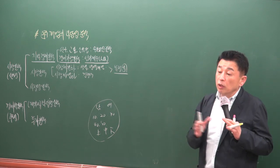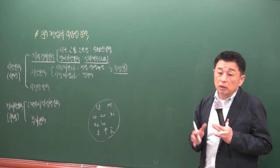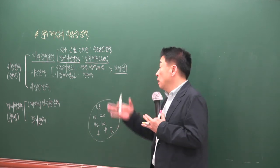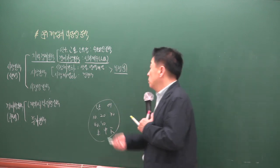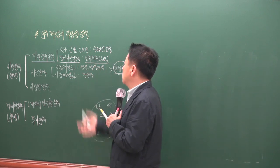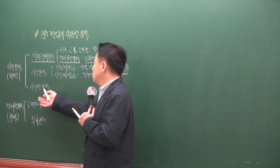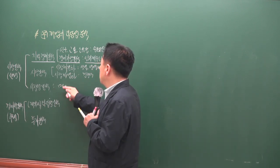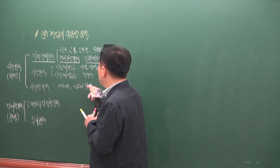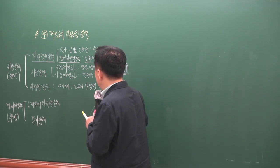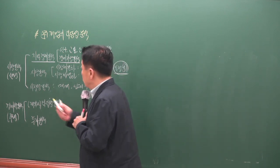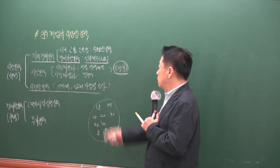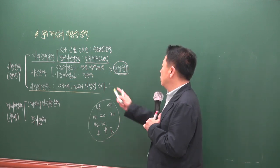개발업자가 모든 유형의 주택을 공급할 수는 없으므로, 상가만 분양하거나 주거만 공급하는 등 타깃 계층이 있습니다. 이 부동산에 대한 시장 세분화와 차별화를 하는 것이 시장 분석입니다. 시장성 분석은 전 단계에서 조사된 특정 부동산이 시장에 공급됐을 때 매매되거나 임대될 수 있는 가능성을 조사하는 것입니다. 이때 활용되는 것이 흡수율 분석입니다.